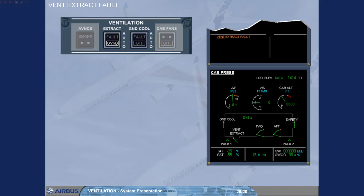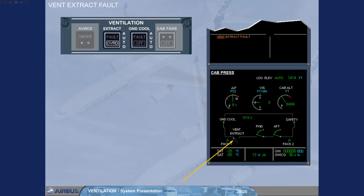On the ECAM cabin pressurization page, note that the ventilation system has been reconfigured, as the extract valve is now partially open to ensure adequate ventilation of the avionics system. This configuration is also used for the avionics smoke procedure.